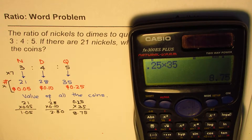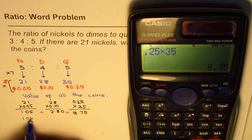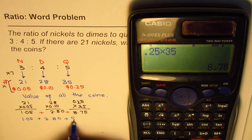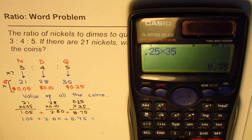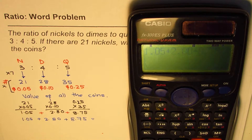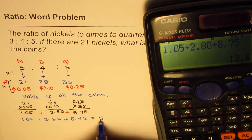So these are the values of each coin type. If you add them all, you get the total value. So we'll do 1.05 plus 2.80 plus 8.75, and that gives us $12.60 in dollars.